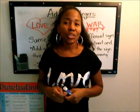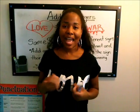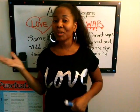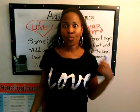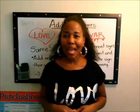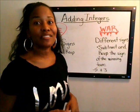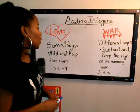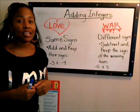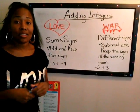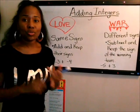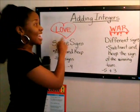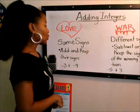The strategy we're going to use today with adding integers is the love situation or the war situation. When you're adding two numbers that are the same sign — two negatives or two positives — that's a love situation.